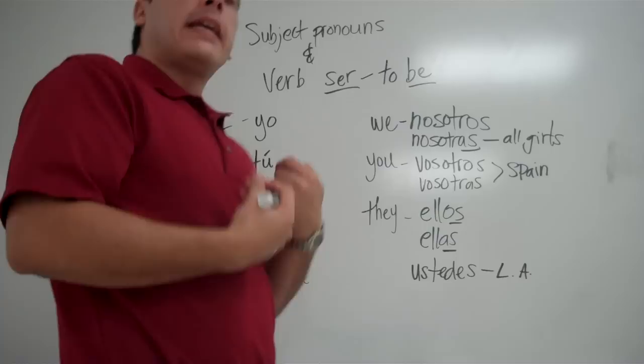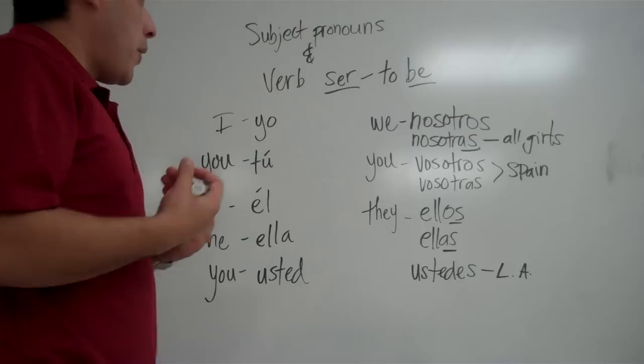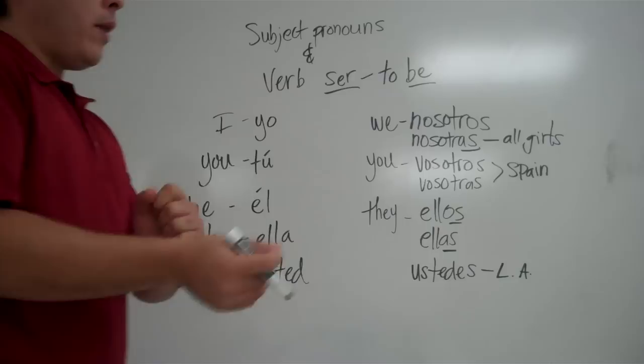To be. Alright. So, what's to be in English? Well, to be in English is I am. You are. He is. She is. We are. They are. All those forms of the verb. Okay. That's when you're giving information about somebody.